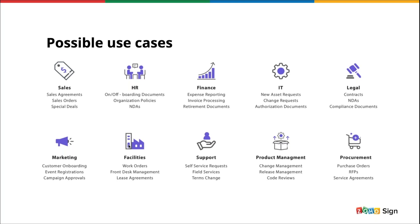Here's a short list of popular industrial use cases where Zoho Sign has replaced pen and paper completely. Notable use cases include sales, HR, finance, and legal, with documents such as sale agreements, sale orders, invoices, estimates, NDAs, and offer letters. Zoho Sign has also found use in niche departments such as marketing, support, IT, and product management, with documents like event registrations, campaign approvals, policy documents, and service agreements. If you see other opportunities to implement Zoho Sign in your business, feel free to explore and get back to us with feedback.